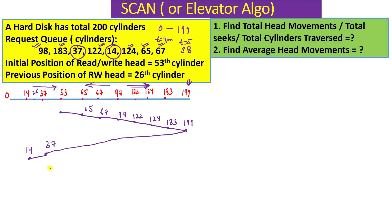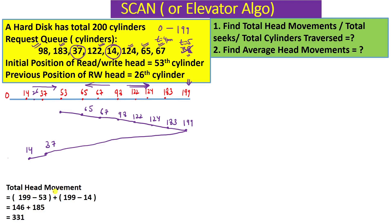If request 38 arrives while the head is at 14, since 38 is in the other direction, the head would first go to cylinder 0 — the last cylinder in this direction — then come back to service 38. But since 38 was not in the original request queue, the head stops at 14. Now let's calculate the total head movements.